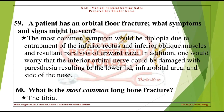A patient has an orbital floor fracture. What symptoms and signs might be seen? The most common symptom would be diplopia due to entrapment of the inferior rectus and inferior oblique muscles and resultant paralysis of upward gaze. One would also worry that the inferior orbital nerve could be damaged, with paresthesia resulting to the lower lid, infraorbital area, and side of the nose.